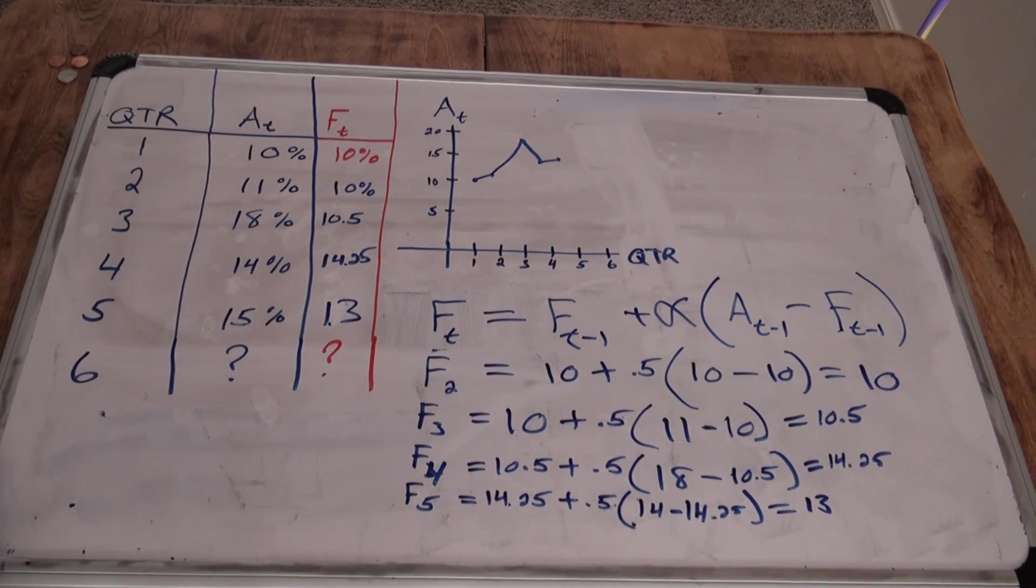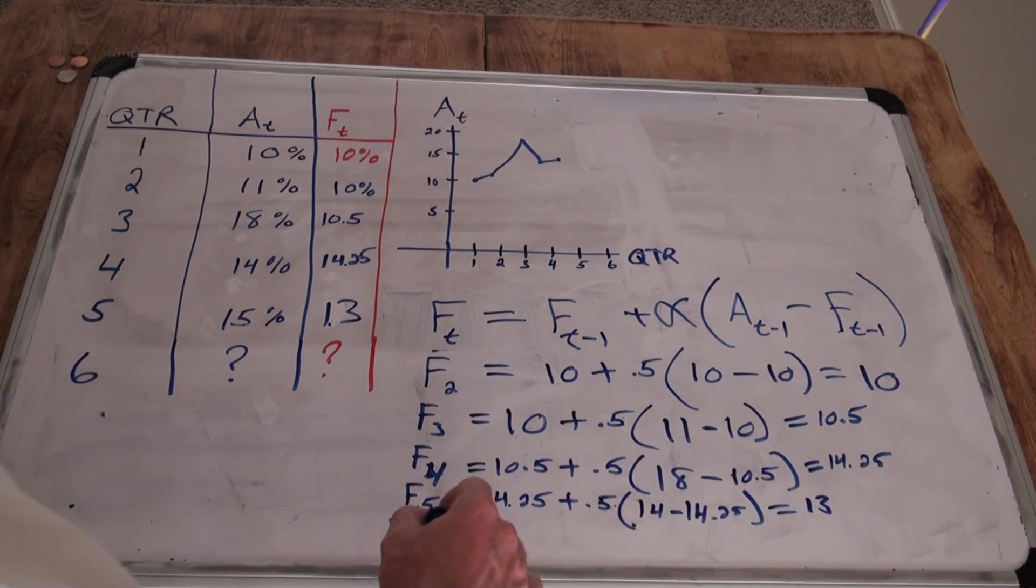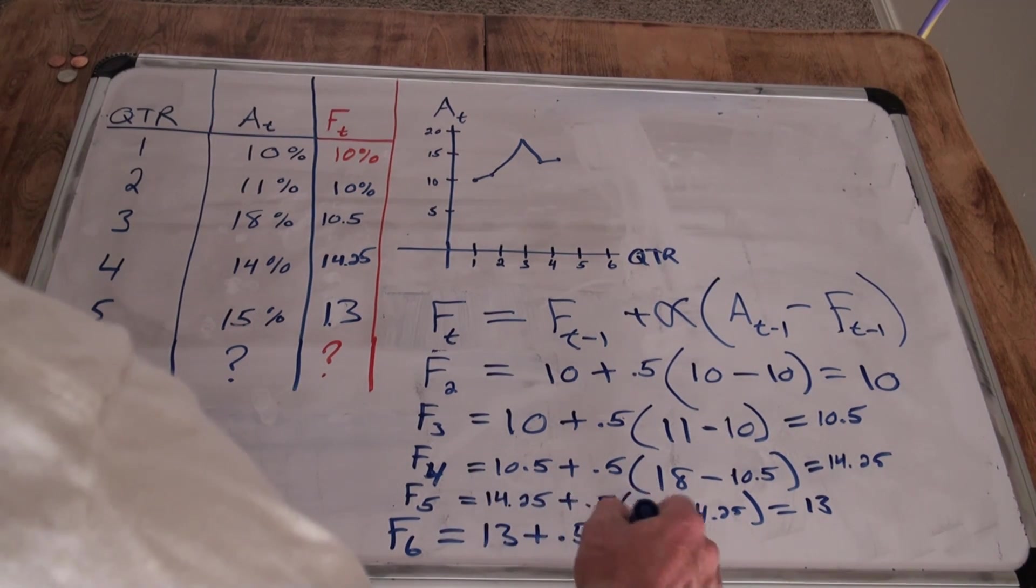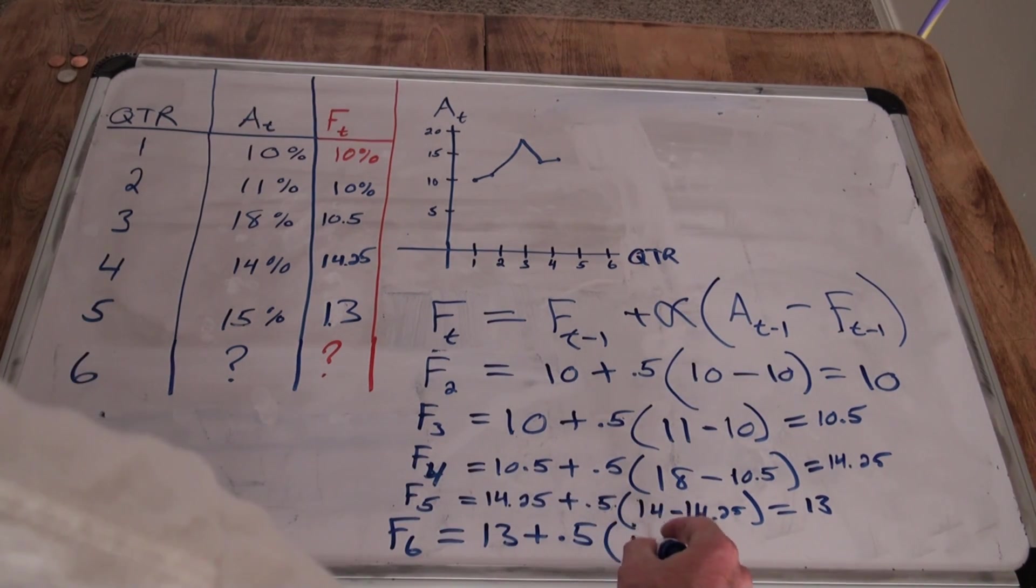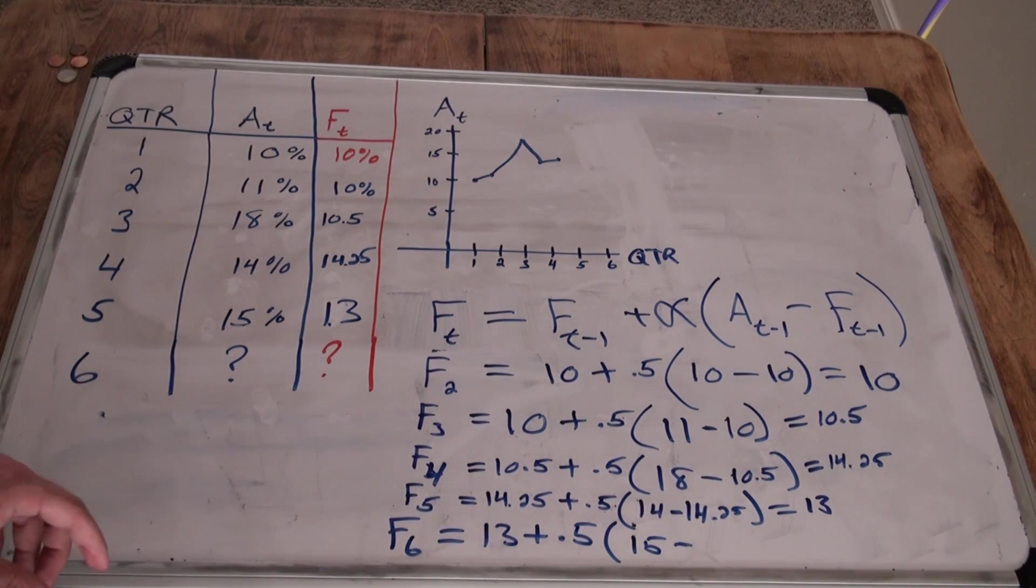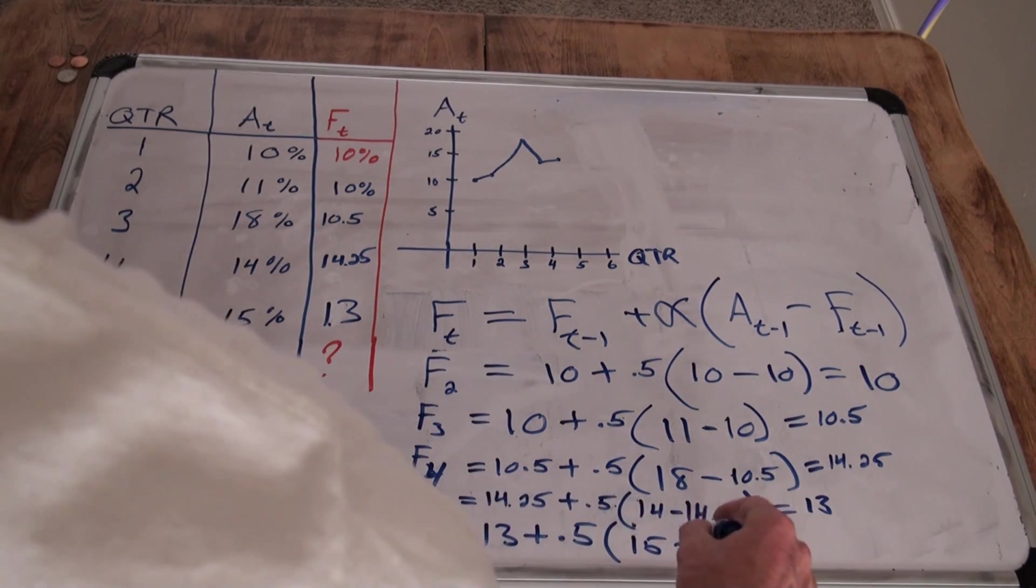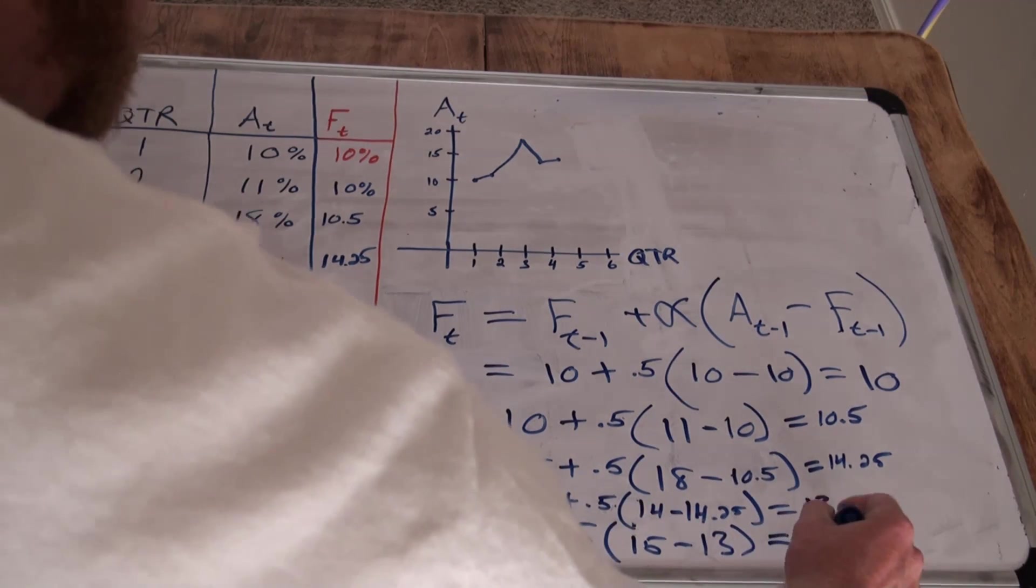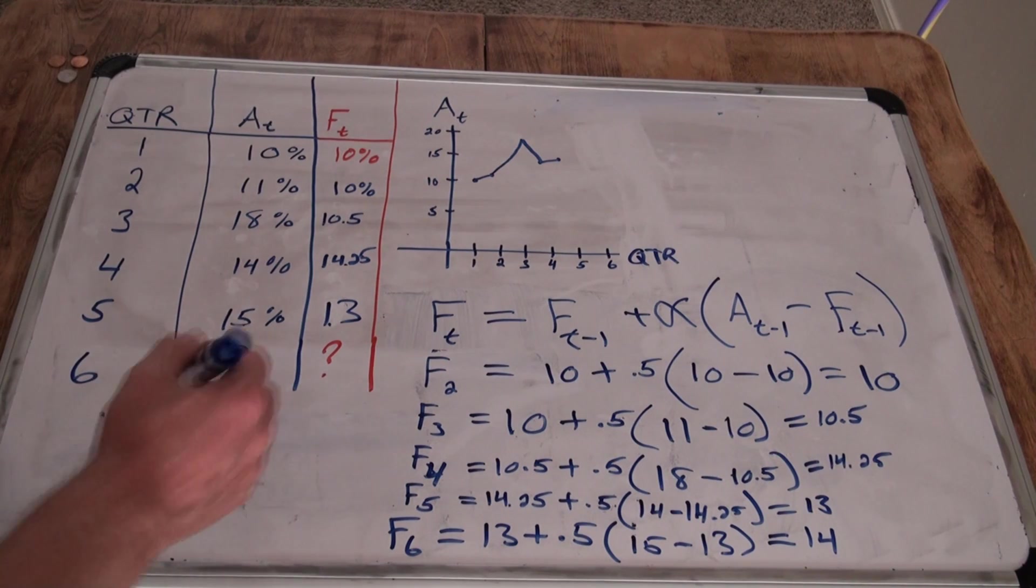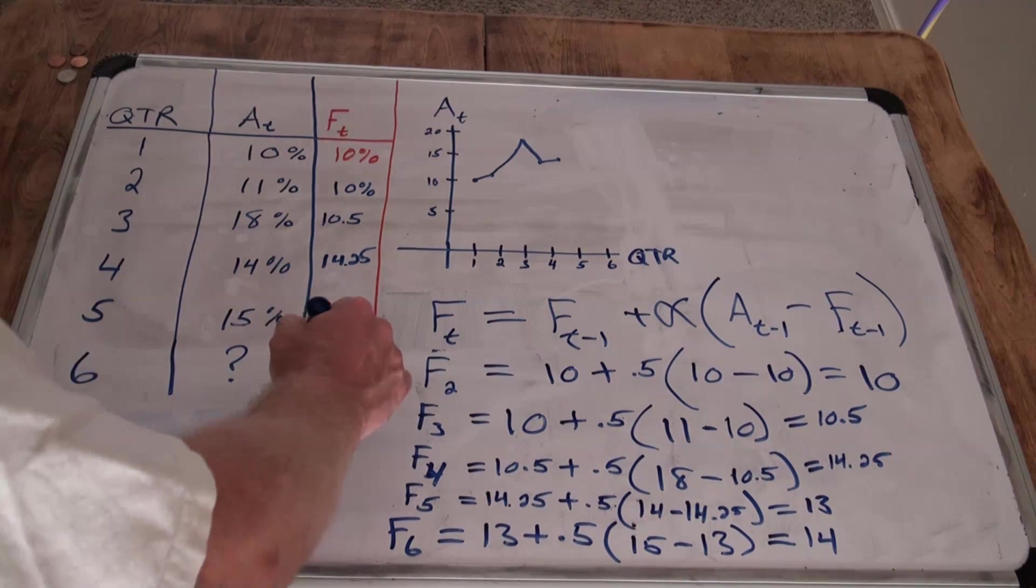So, now we can finally forecast our sixth quarter like we wanted to. So, the sixth quarter forecast is equal to the forecasted fifth quarter, which was 13, plus smoothing constant times actual fifth quarter, which was 15, subtract forecasted fifth quarter, which was 13. 15 minus 13 is 2. That would be 1, plus 13, equals 14. So, there we have it. Our sixth quarter forecast is 14 in that example.